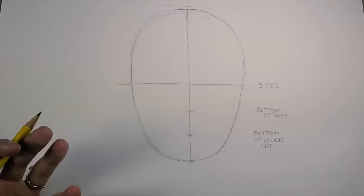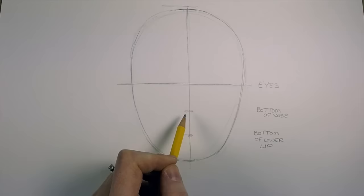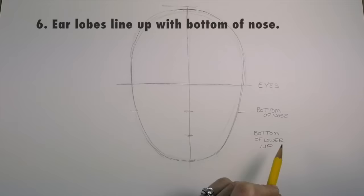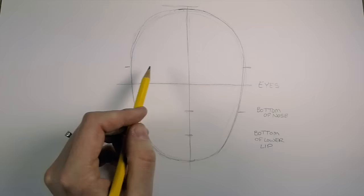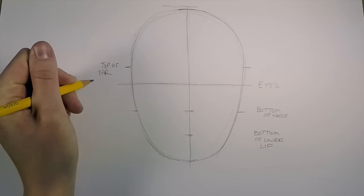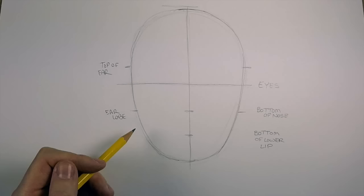Next up, we want to figure out where the ears are. Generally, unless you're elderly or have gauged ears, your earlobes line up with the bottom of your nose, and then the tops of your ears line up around your eyebrows. Again, that depends on how big your eyebrows are or if they're really high or really low.